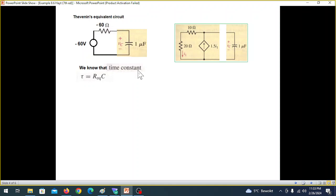And couple of things. We know that the time constant for a circuit is given by τ is equal to R equivalent multiplied by C. This is for the RC circuit.